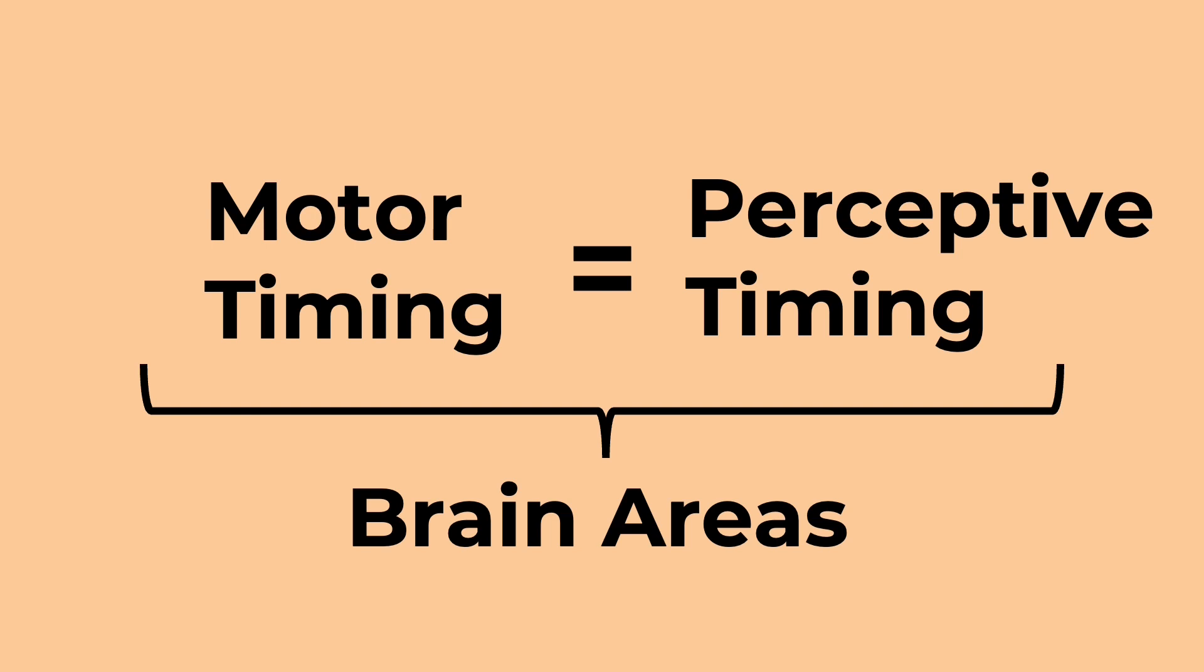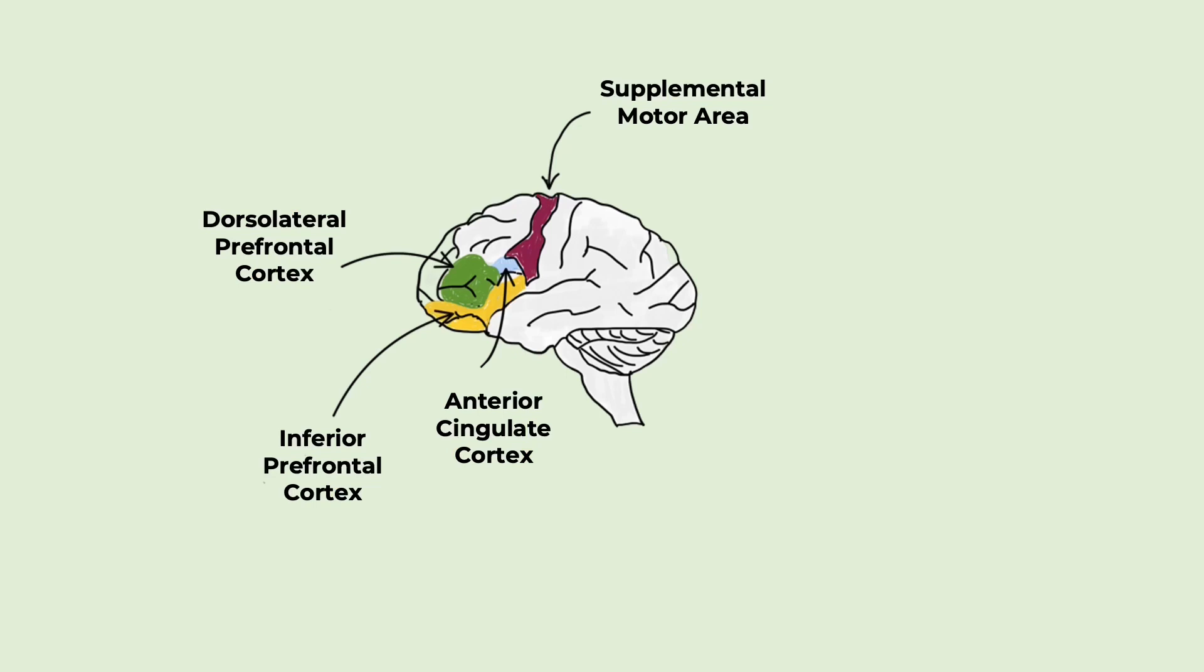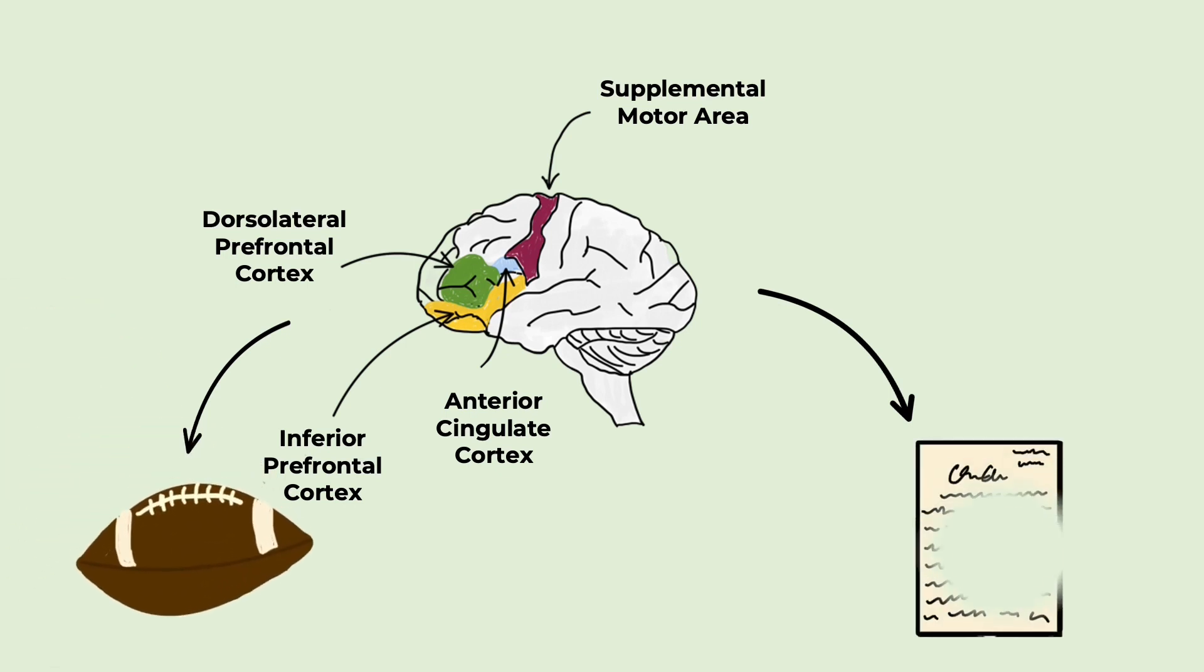Both motor and perceptive timing have been found to use the same brain pathways. This means that it's the same areas firing when you're trying to time a run to catch a football as figuring out how long it will take to write an essay.